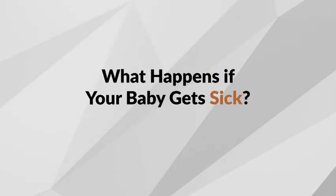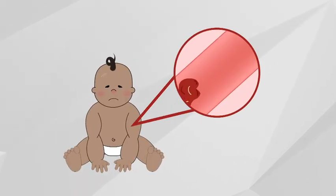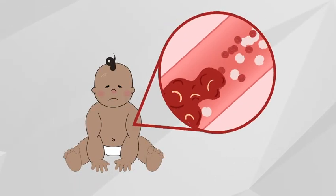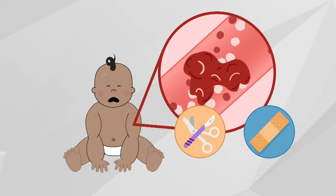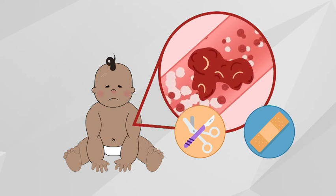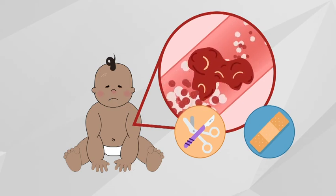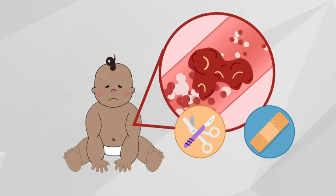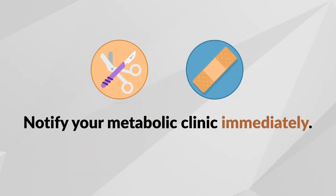What happens if your baby gets sick? The risk of blood clots is increased with surgical procedures and illness. During any illness, after injury, or should your child need surgery, it is very important to notify your metabolic clinic immediately. The diet and medications may be adjusted depending on the type of illness or injury.